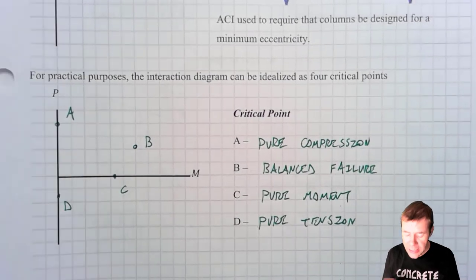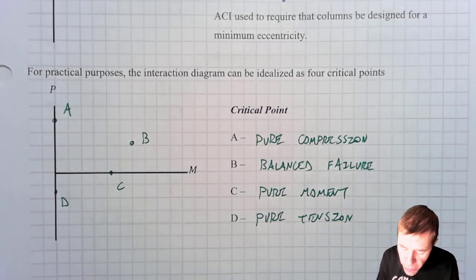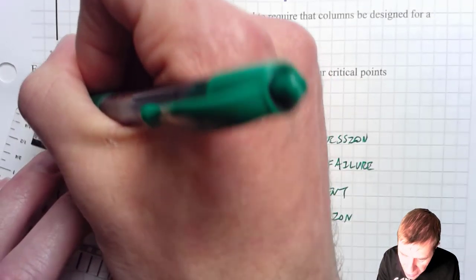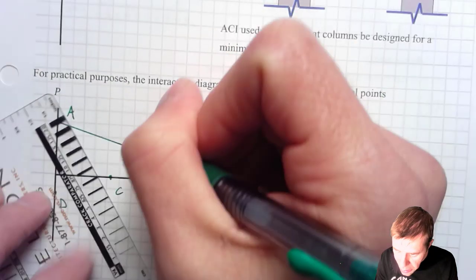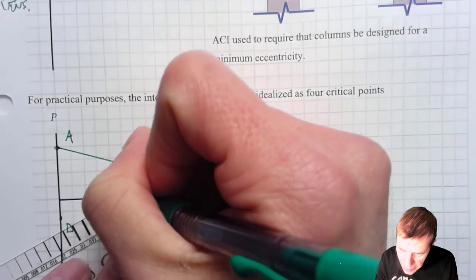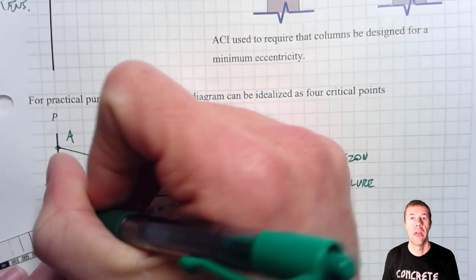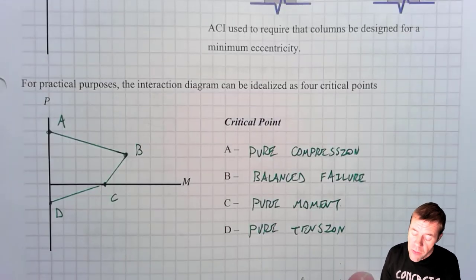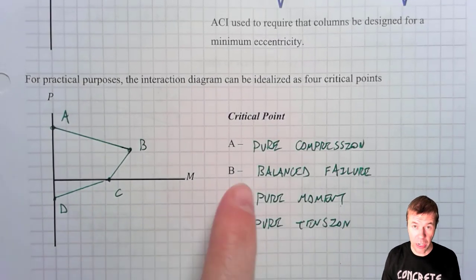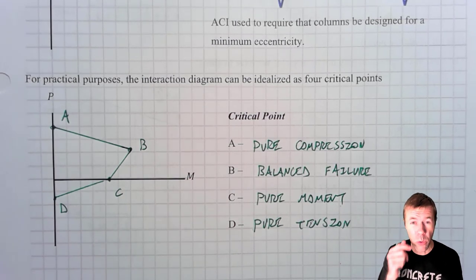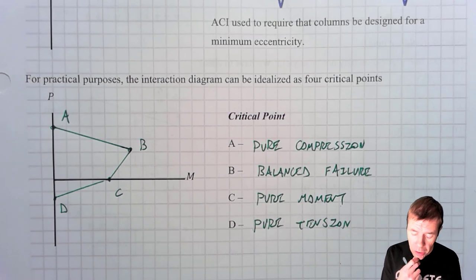Now, the coolest thing is that I can take this entire parabola, and instead of making a parabola, I can draw it as straight lines. Line, line, line, line. Hey, they look the same, don't they? This is much easier to calculate, much easier to use, and it's going to be something that we're going to derive. We will derive interaction diagrams. There will be an example problem about that coming up.